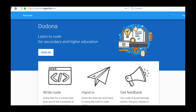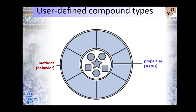In this video we watch how the ISBN exercise from series 10 can be completed. Here we want to design our own data types using classes. Each data type has specific properties that reflect the status and methods representing the behavior.